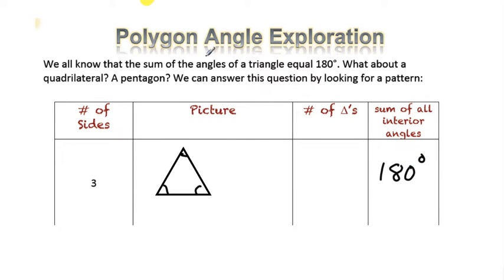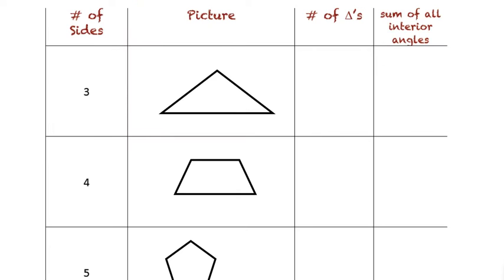We're going to start filling in the table and looking at this, because the question is: what about for a quadrilateral? How many total degrees are in a quadrilateral? How many total degrees are in a pentagon? That's where we're going with this. There's a column here that says the number of triangles — for right now we're just going to put a one there, and this will make more sense in a second. So we had one triangle and the sum of the interior angles is 180 degrees.